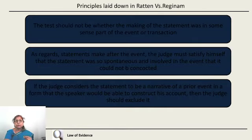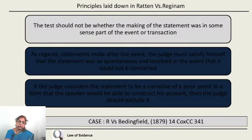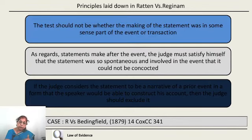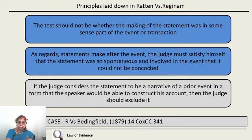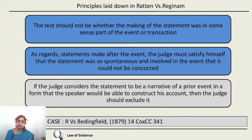From Raton versus Regina, the key principles are: the test should not be merely whether the making of the statement was in some sense part of the event or transaction, but additionally, the judge should satisfy himself that the statement was so spontaneous that it could not be concocted and there was no opportunity to fabricate a false story. Thirdly, if the judge considers the statement to be a narrative of a prior event where the speaker could construct his account, the judge should exclude it — as in R versus Beddingfield, where the time gap made the statement inadmissible.